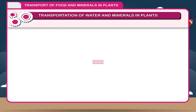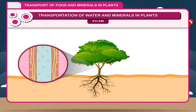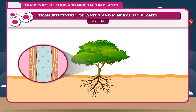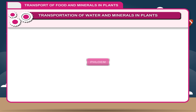Xylem consists of mainly thick and tubular cells forming a pipe-like structure. It conducts water and minerals from the ground to the stems and leaves.